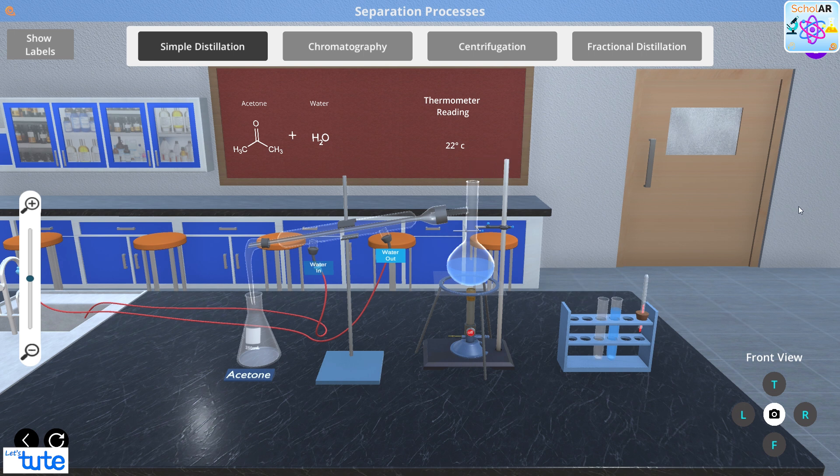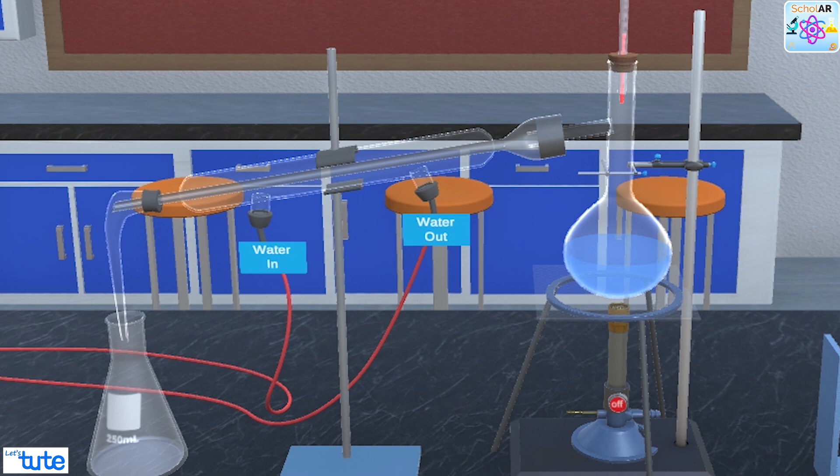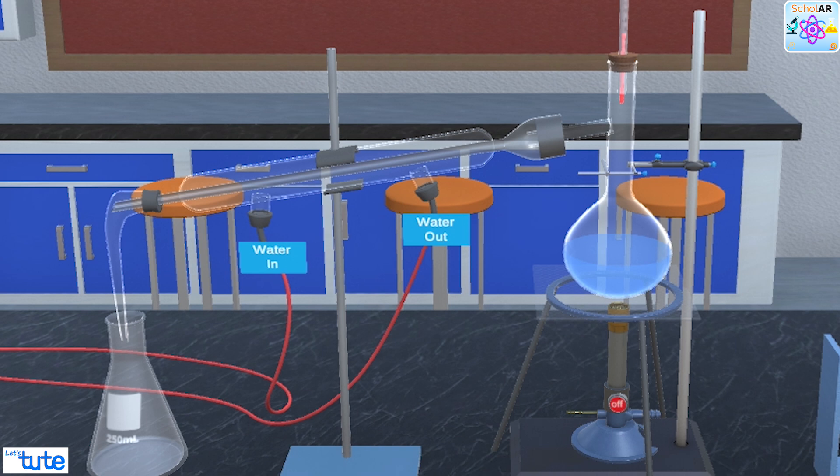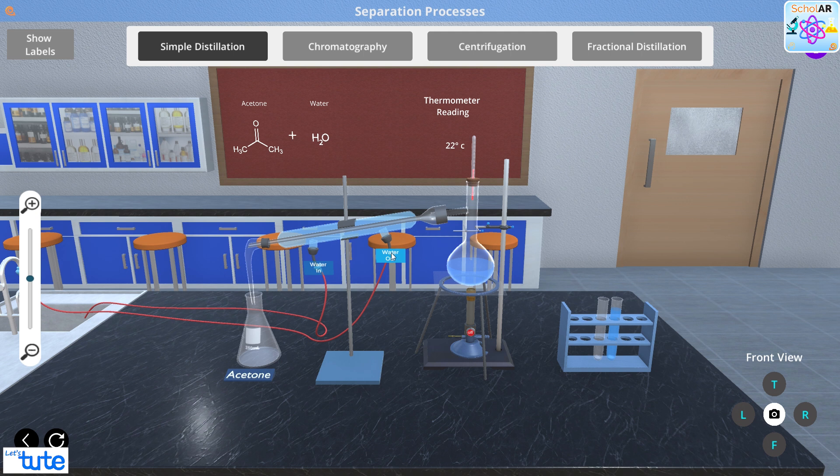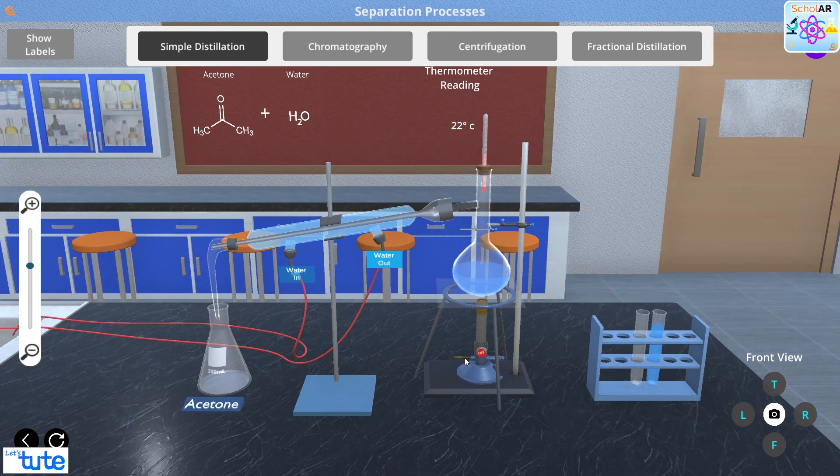Now we'll put the thermometer with the cork attached to it and close the distillation flask. Here we can see an outlet for water in and out. Let's click on them. Now our setup is ready, and we just need to put the Bunsen burner on by clicking on the red button.